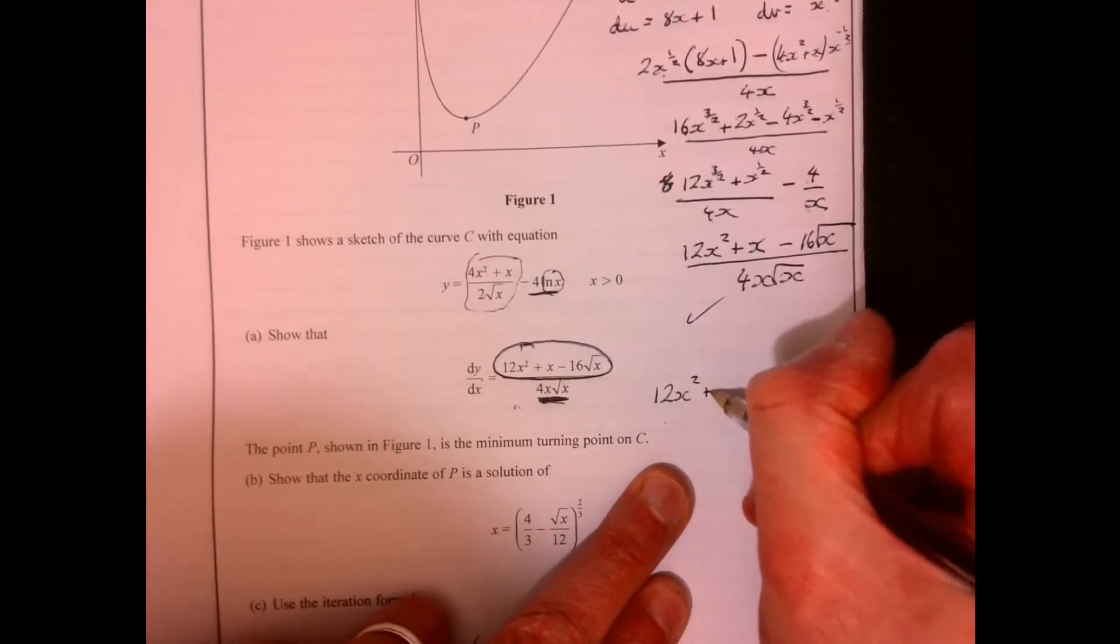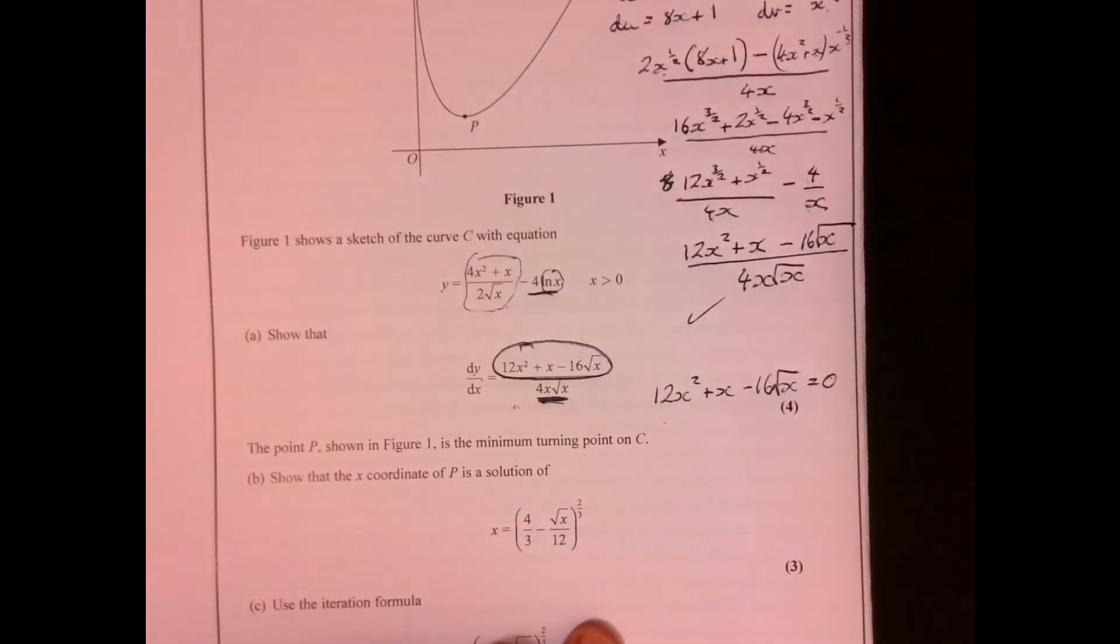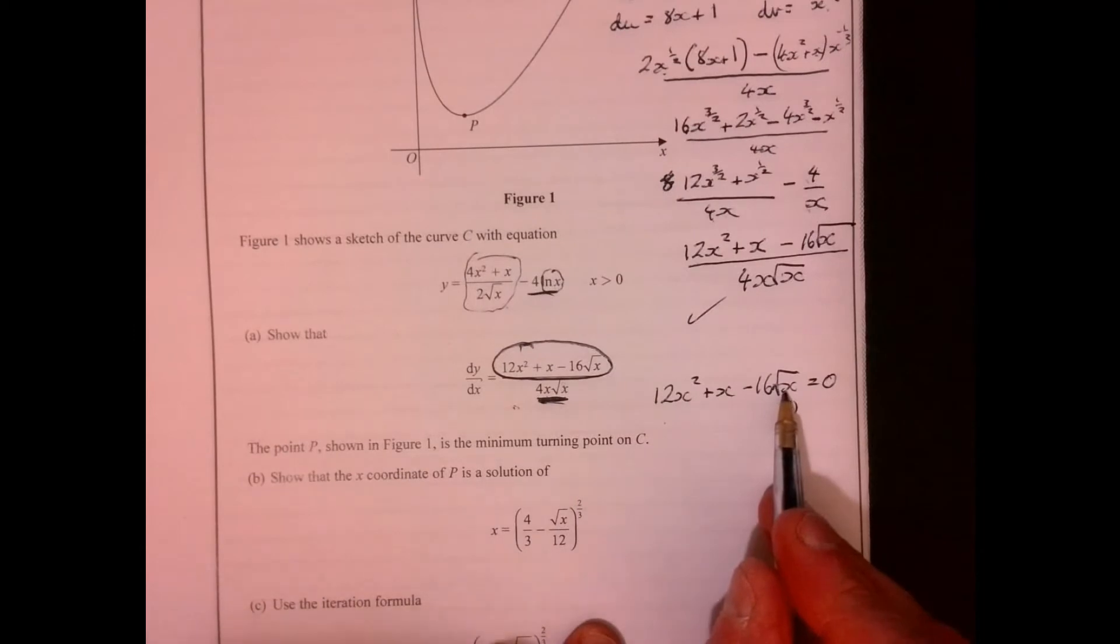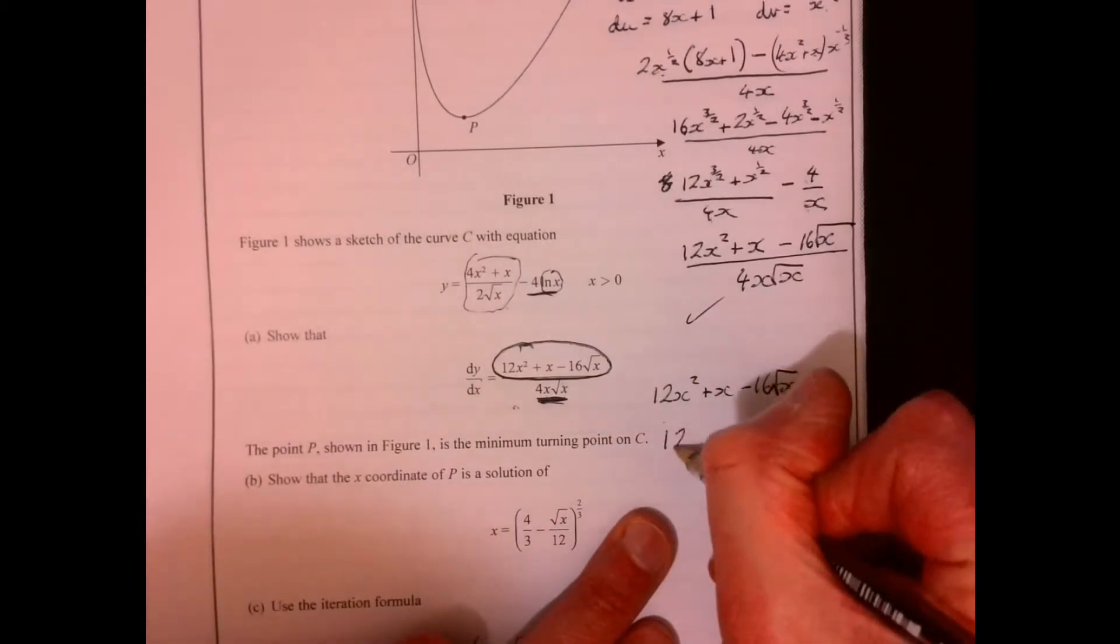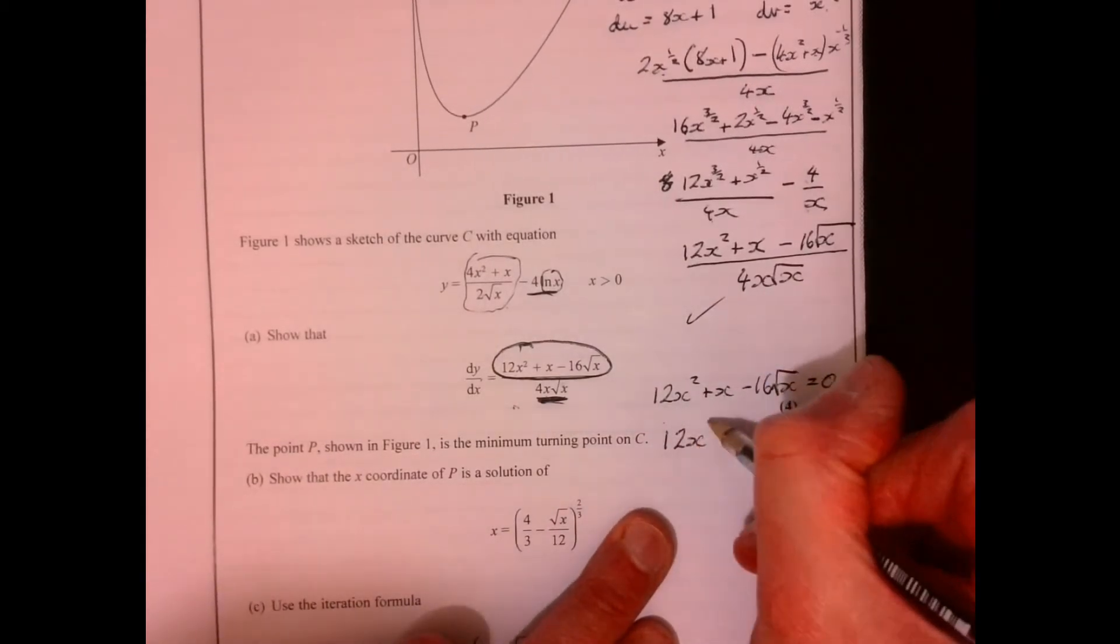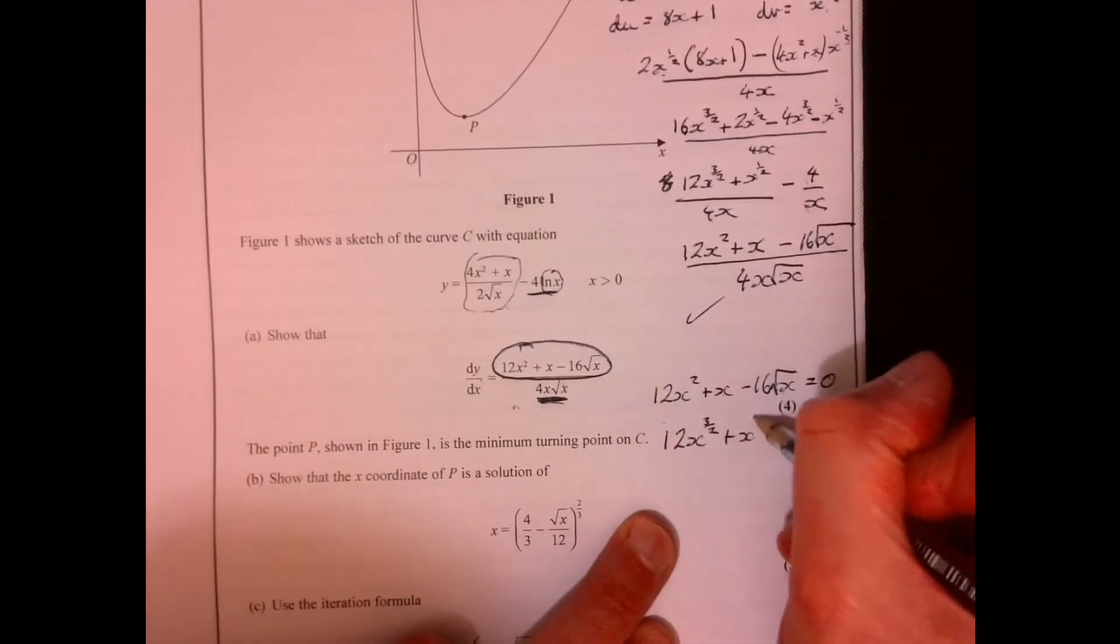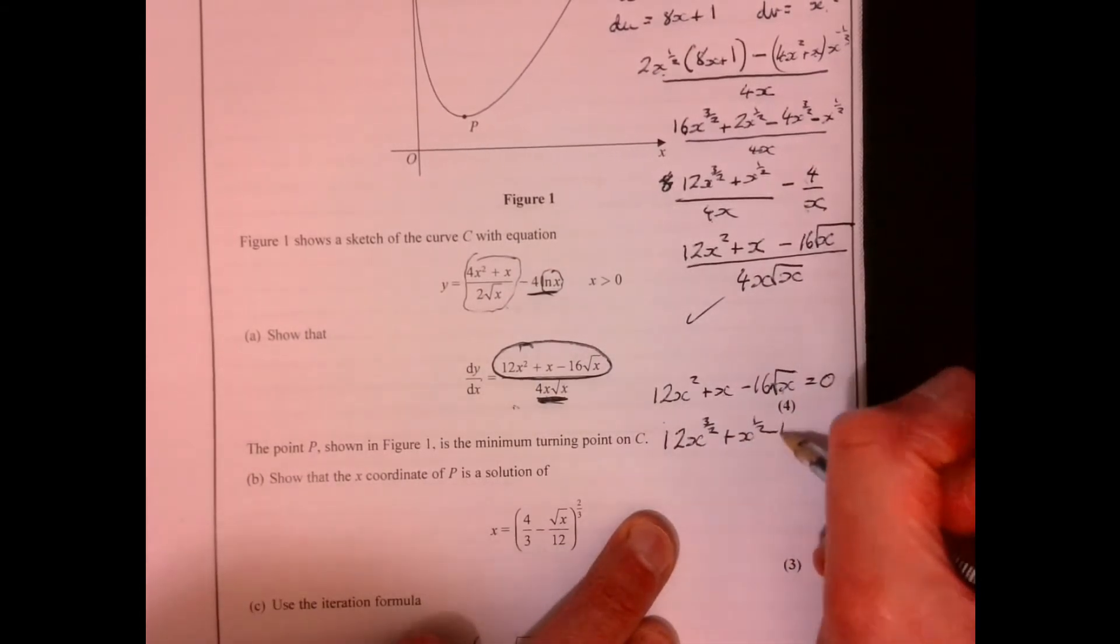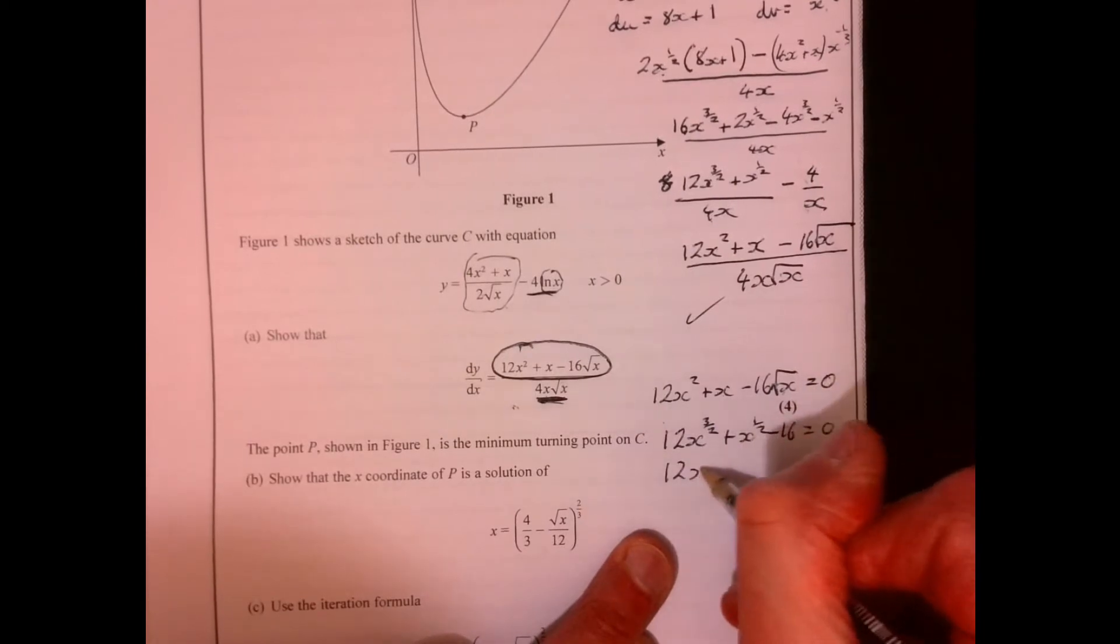So let's just jot it down first of all and see where it takes us. Let's have a look and think about what we can actually do there. Well, I think we could divide through by root x. So let's just think about tidying this up a little bit. That gives us 12x to the 3/2 plus x to the half take away 16 equals zero.